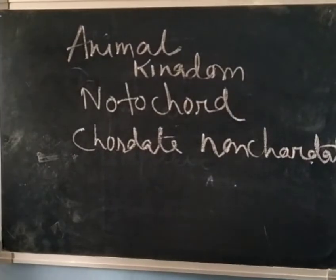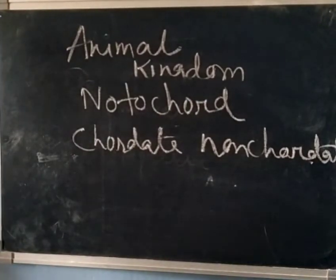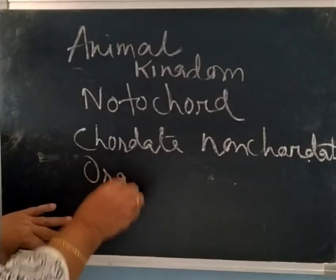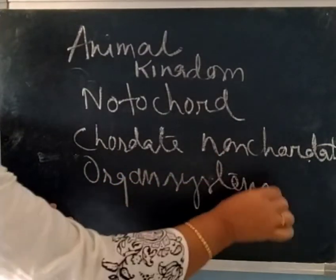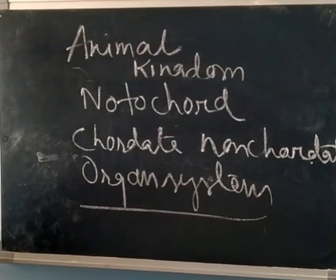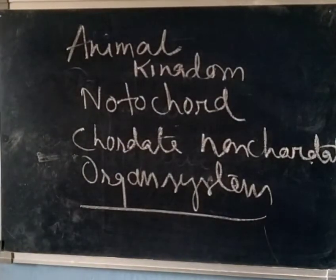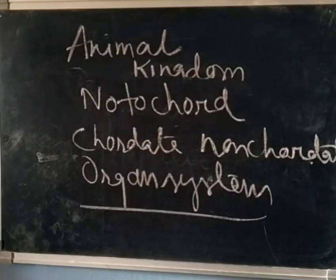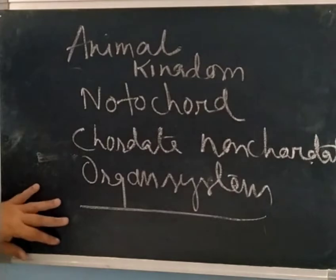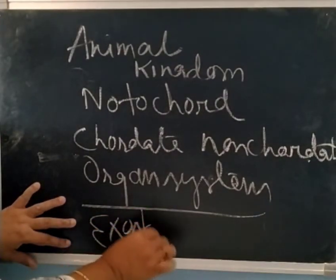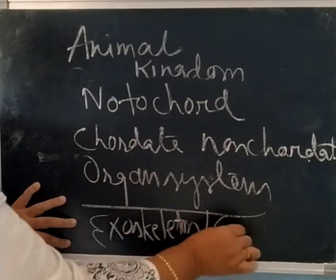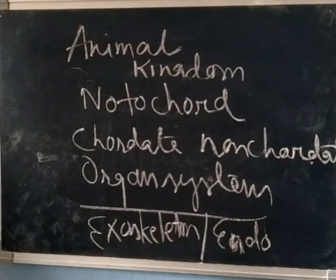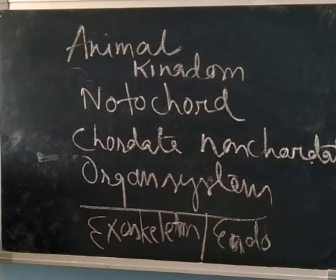There are various organ systems present in animals, including the respiratory, digestive, circulatory, endocrine, sensory, and skeletal systems. Regarding the skeletal system, there is the presence of exoskeleton and endoskeleton. The skeletal system present outside the body is called exoskeleton, while the one inside — having cartilage and bone — is normally the endoskeleton.